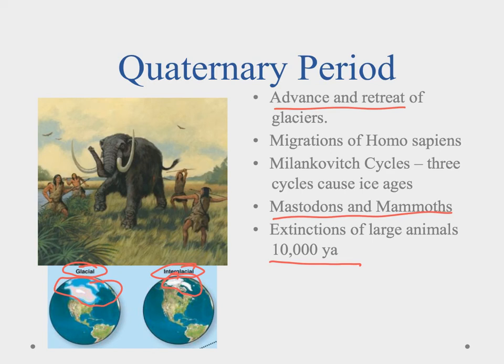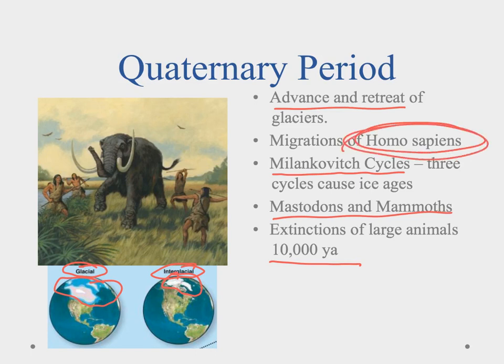A couple of other things when talking about ice ages: the lessons will tell you about the Milankovitch Cycles. Those were three different cycles that interrelated, and when they all hit at the same time, it would cause an ice age. One of the big things we notice in the quaternary is the migration of Homo sapiens — modern man came on to the picture during the quaternary period, and that may have helped with the extinctions of some of these larger animals.